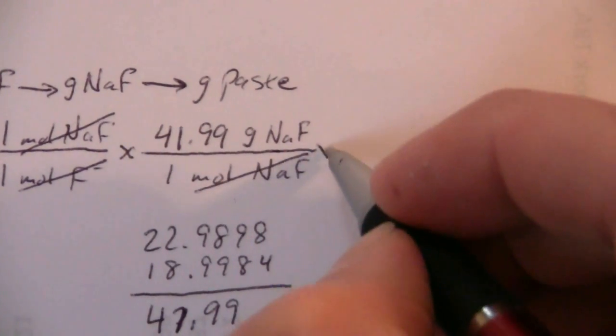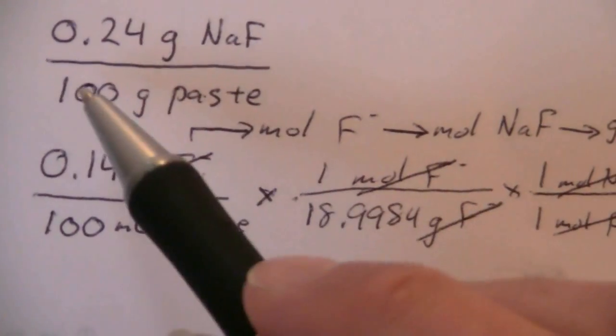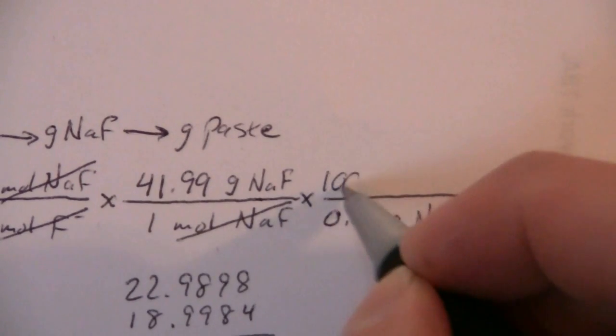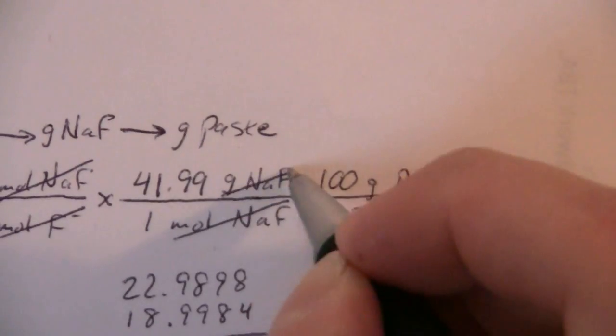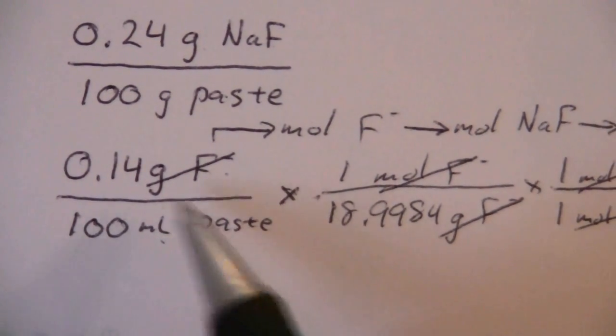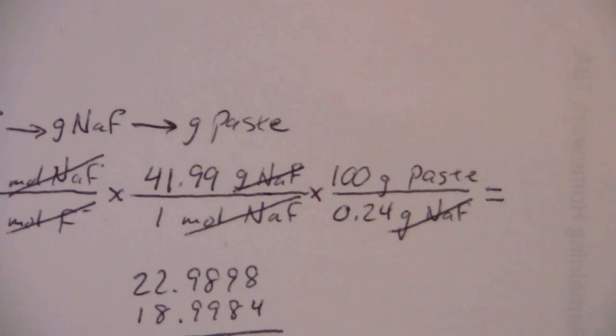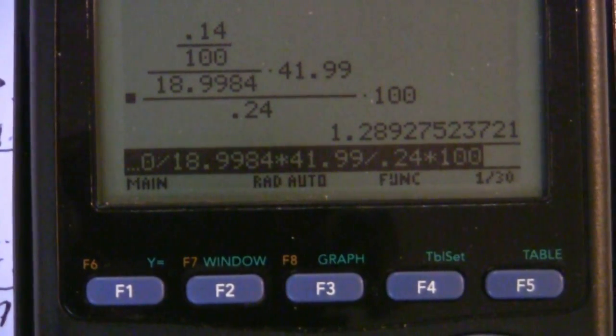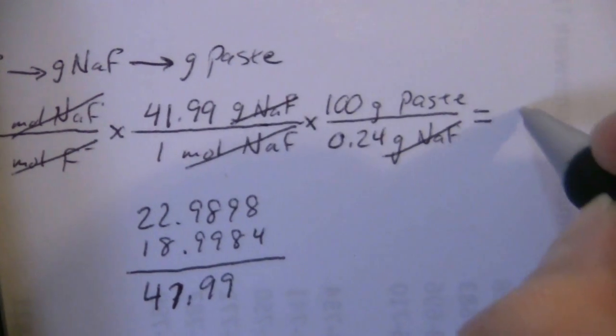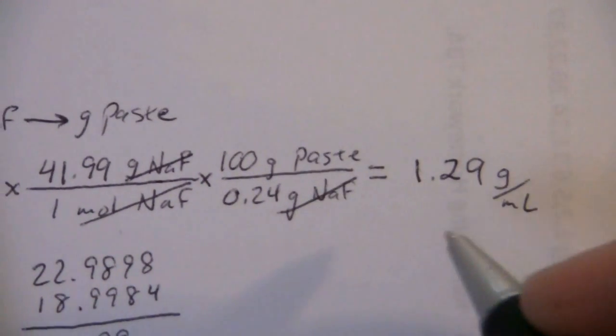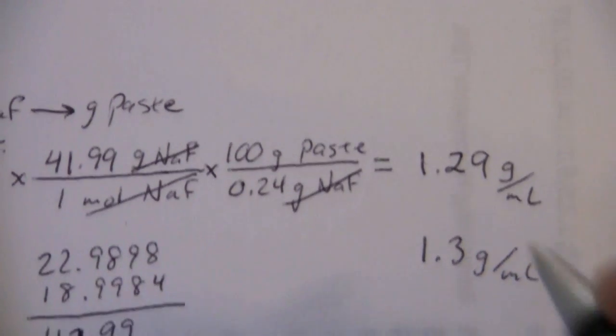Now we have grams of sodium fluoride, and we know how many grams there are per gram of the paste: 0.24 grams per 100 grams of paste. We can put that on the bottom: 0.24 grams of sodium fluoride to 100 grams of the paste. Those cancel, and what I'll have is grams of paste over milliliters of paste, which is density. Let's go ahead and put this in the calculator. We end up with 1.29 grams per milliliter. That is the density of the toothpaste. And if I kept my significant figures, that would be 1.3 grams per milliliter.